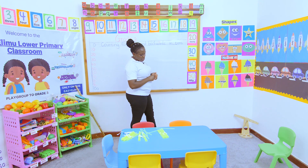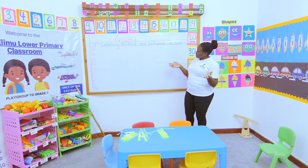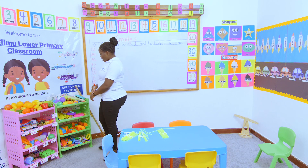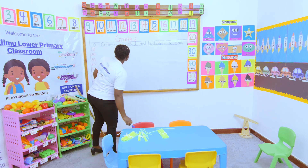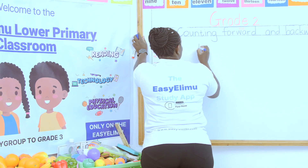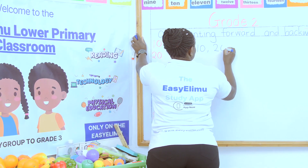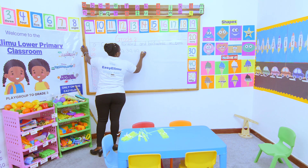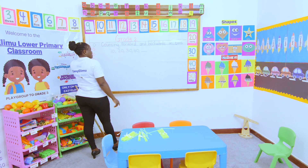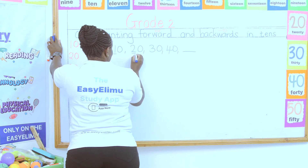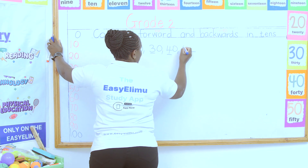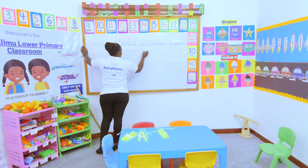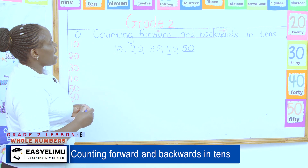So if you're told to count forward in tens, the rule says the number must end with a zero. For example, if I'm told which one is the missing number and I have 10, 20, 30, 40 — the number increases: one, two, three, four. So the next number will be five, and a ten must have a zero, so the answer is 50.